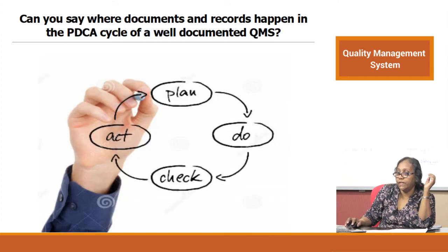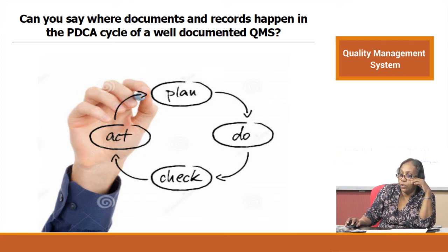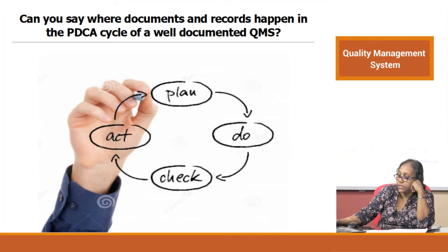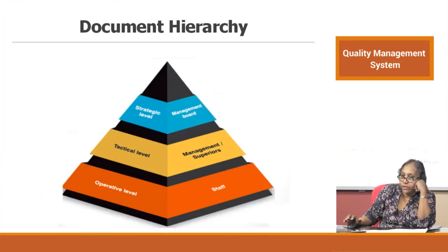How do we accomplish that? Back to the PDCA — Plan, Do, Check, and Act. Can you identify where documents and records happen in the PDCA cycle of a well-documented QMS? Let us examine by looking at the document hierarchy.